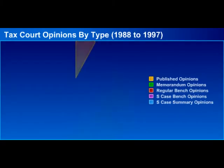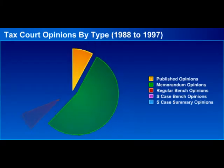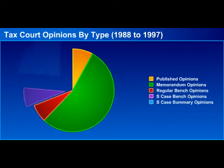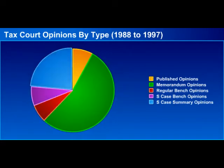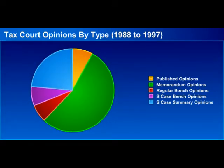This chart shows a breakdown of a 10-year average of total opinions rendered by the tax court by type. You can see that the majority of cases are not published and are without precedential value. About 7.6% of the cases during this window were published.